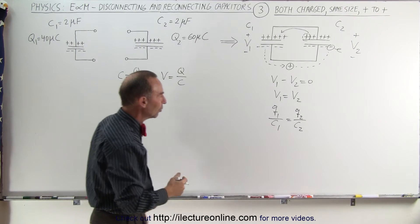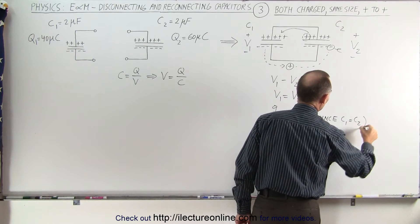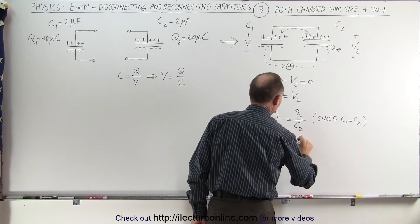Since C1 and C2 is the same, so we can say since C1 equals C2, we can get rid of C1 and C2, and we can say that Q1 must equal Q2.